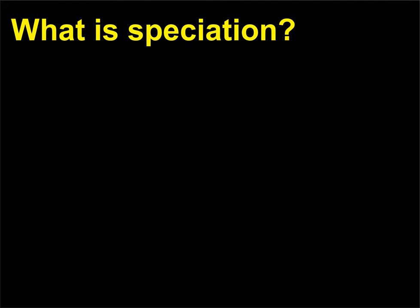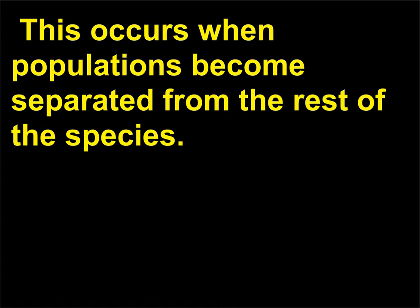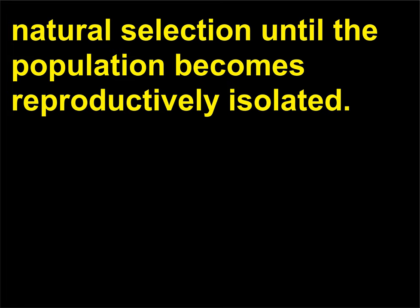What is speciation? Speciation is the process by which new species are formed. This occurs when populations become separated from the rest of the species. At this point, the isolated group will respond independently to natural selection until the population becomes reproductively isolated. The group is then considered a new species.